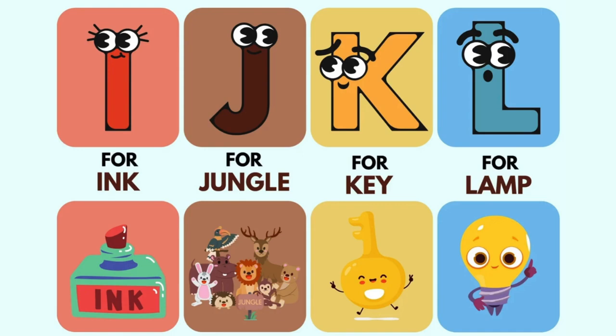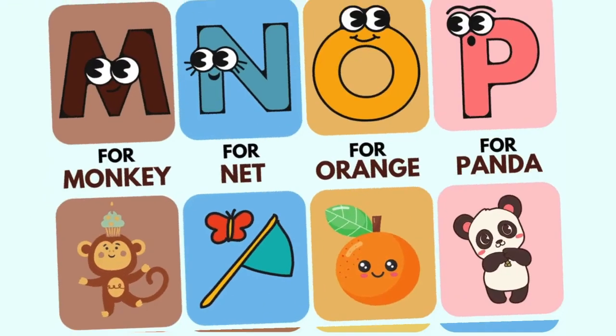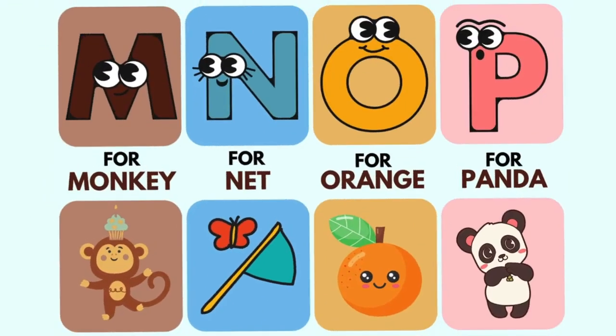K is for key, L is for land, M is for monkey, N is for net, O is for orange.